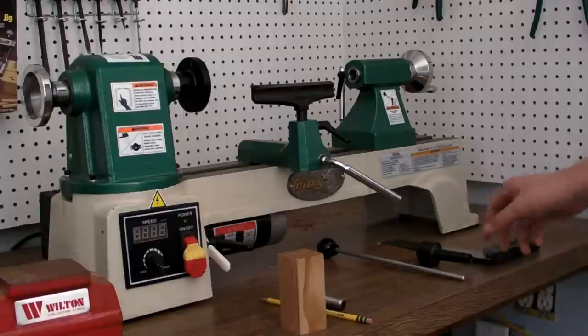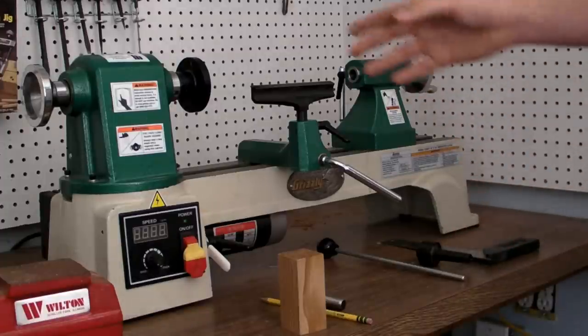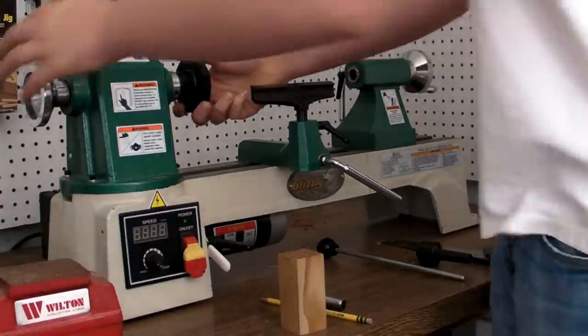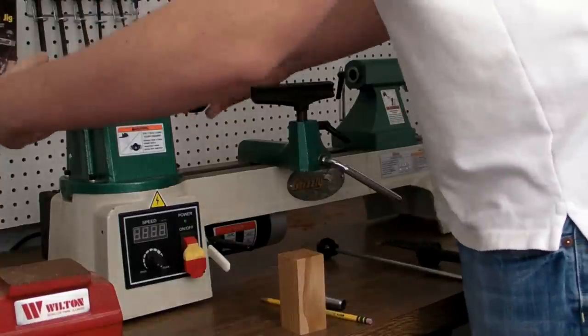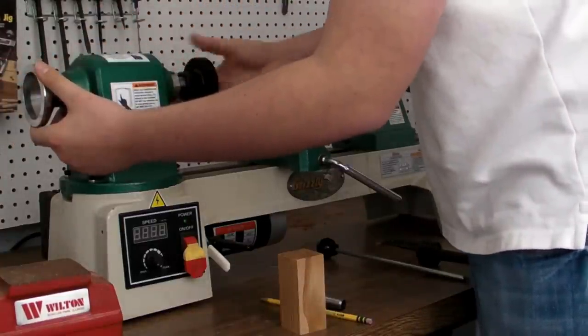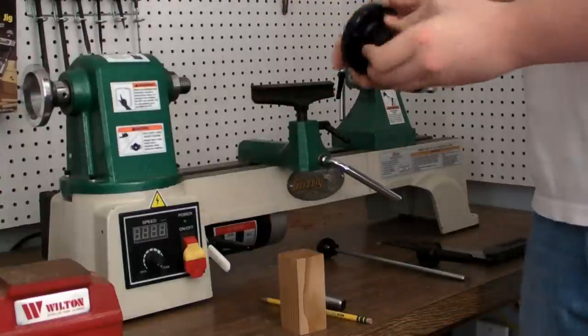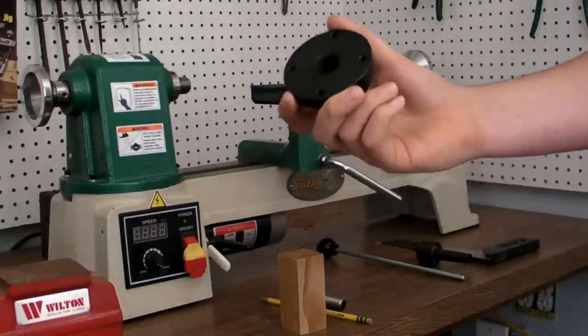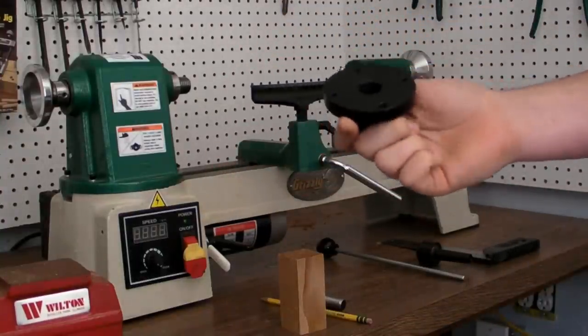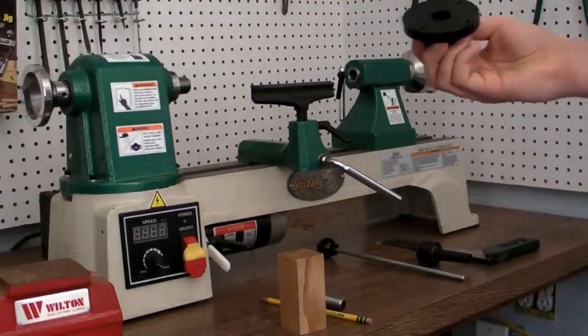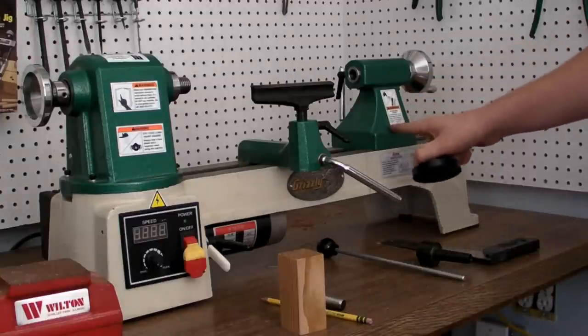Next, we have the parts to the lathe, the accessories. Mounted on here, I have a face plate, which simply screws onto the head stock. We will cover this much later, but it's a very useful device for mounting a work piece without using the tail stock.